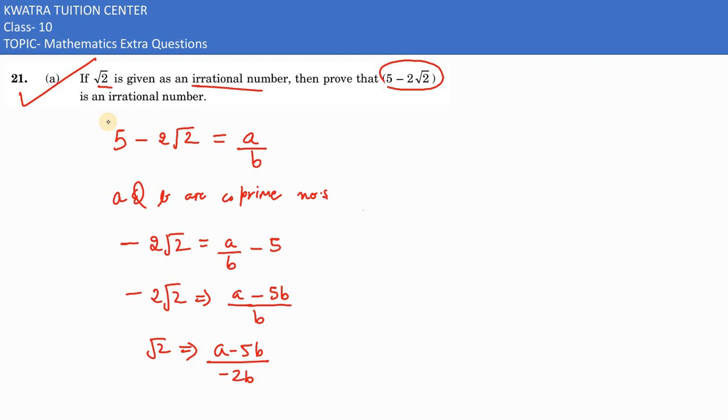So what is our situation? That this side is irrational, so we have given that root 2 is irrational. And how is our right side? It's a rational number.